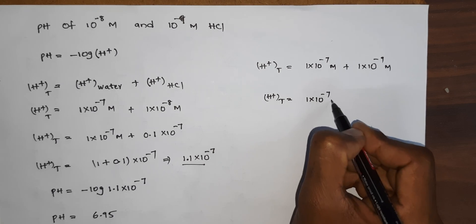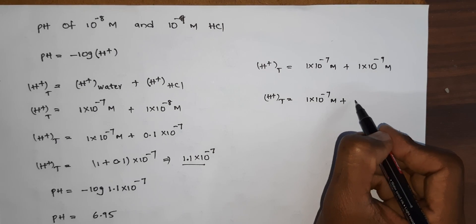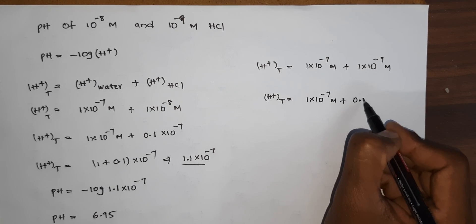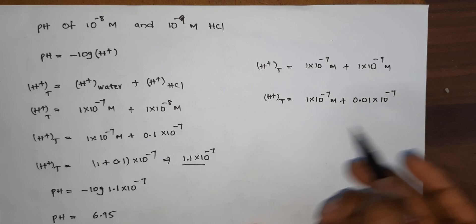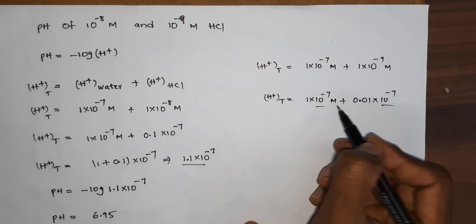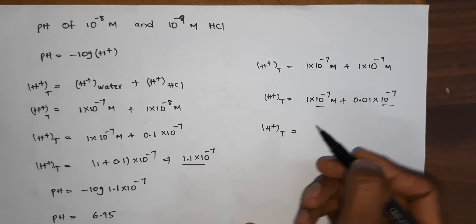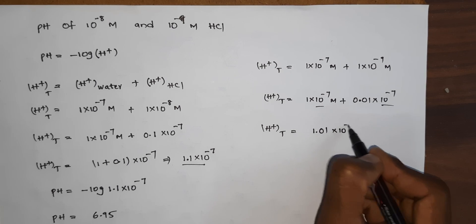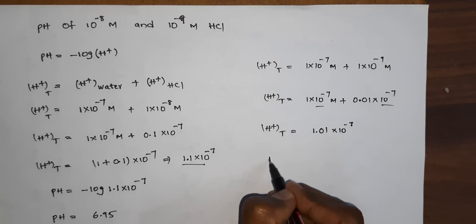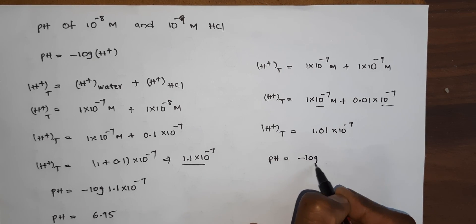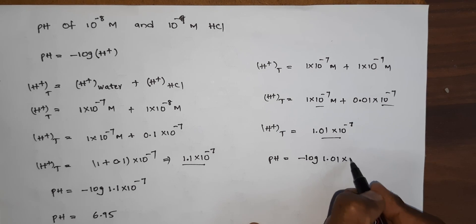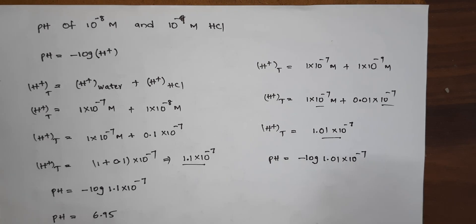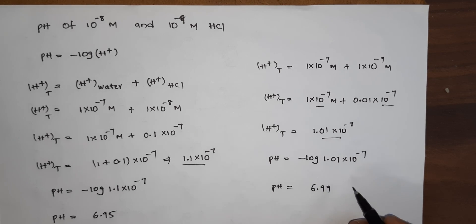Taking 10⁻⁷ as common, H⁺ total equals 1.01×10⁻⁷. So pH equals minus log of 1.01×10⁻⁷. If you simplify this, pH equals 6.99. This is the final pH of 10⁻⁹ molar HCl.